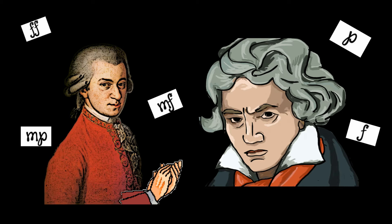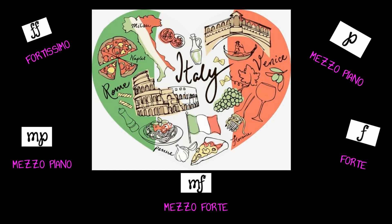Composers, like Mozart or Beethoven that we've already learned about, use symbols to tell musicians what the dynamics are. The symbols come from Italian words.